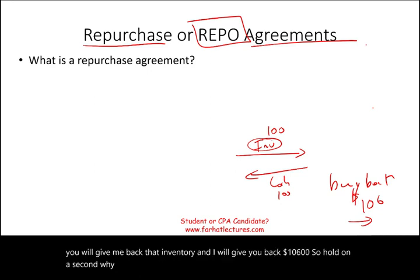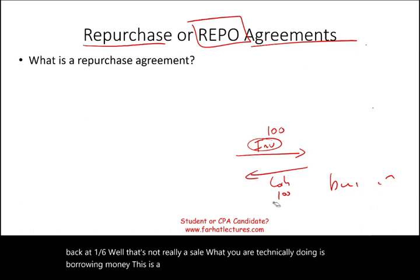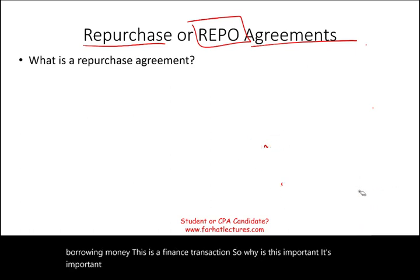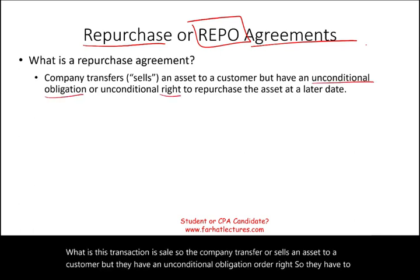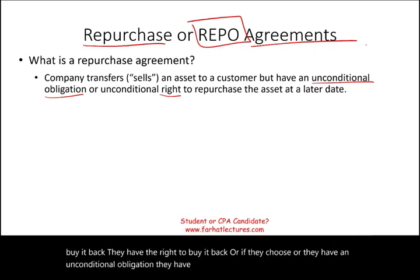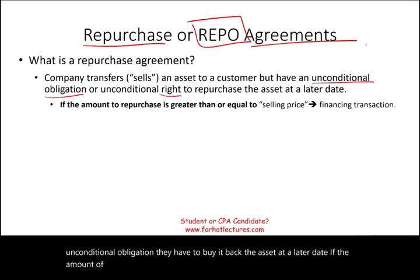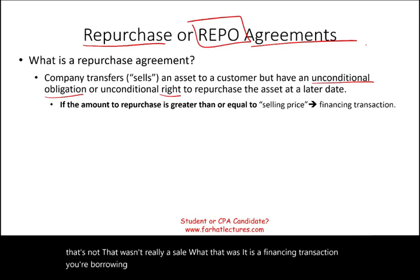So why are we doing this? Why would I sell you something for $100 and buy it back at $106? Well, that's not really a sale. What you are technically doing is borrowing money — this is a finance transaction. It's important for revenue recognition. We want to know whether the company is entering into a repo agreement or whether this transaction is a sale. The company transfers or sells an asset to a customer, but they have an unconditional obligation or right to buy it back. If the repurchase amount is greater than or equal to the selling amount, then that wasn't really a sale — that was a financing transaction, borrowing money but disguising it as a sale.